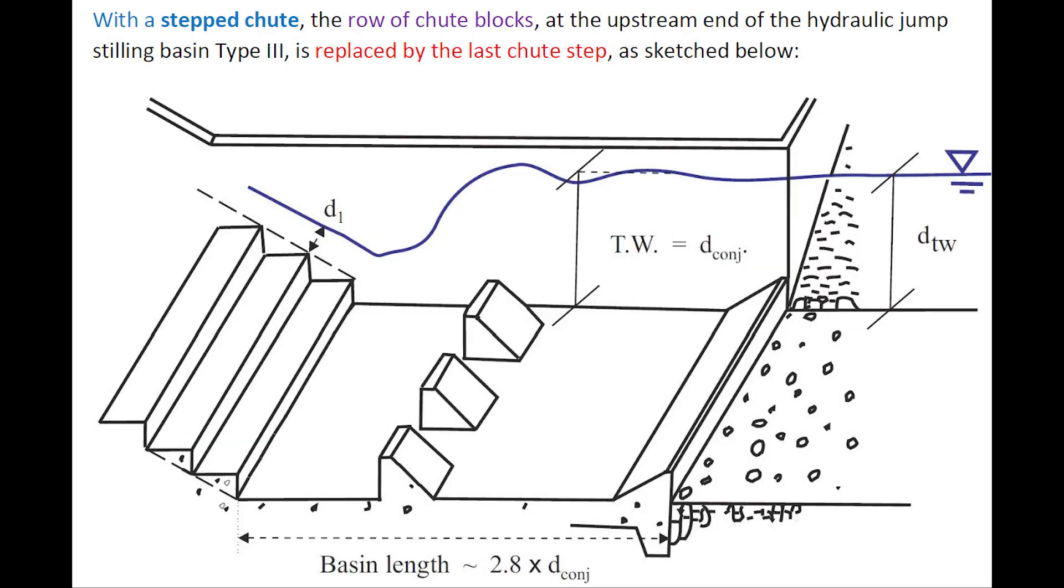With a stepped chute, the row of chute blocks at the upstream end of the Stilling Basin Type III is replaced by the last chute step, as sketched here.